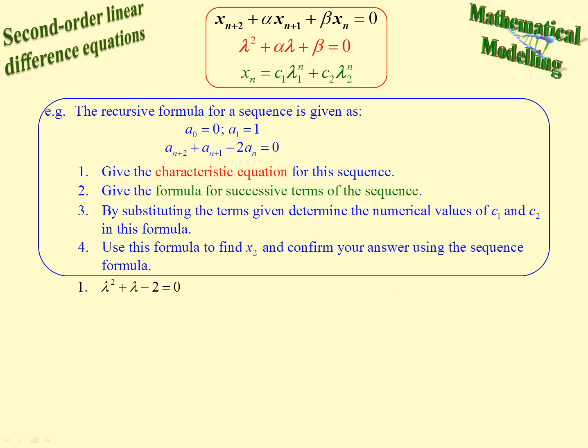So number 1. There's our characteristic equation for the sequence: lambda squared plus lambda minus 2 equals 0. The reason being lambda squared plus alpha lambda, well alpha is 1, plus beta, well beta is negative 2. So there we have it. We have to give the characteristic equation, there it is.